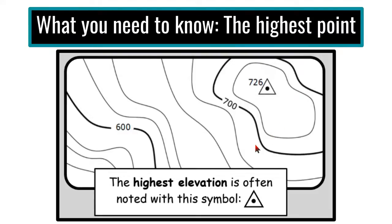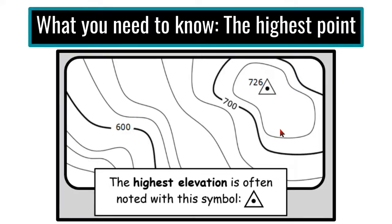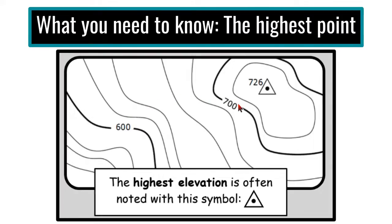Sometimes the highest elevation has a little triangle with a circle in the middle. The question is: why doesn't it have another contour line? Because it doesn't go up the full amount to require one. For the next example, the index contours are 600 and 700 — it's not counting by tens but by 20s: 600, 620, 640, 660, 680, 700.